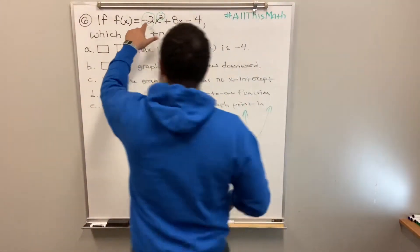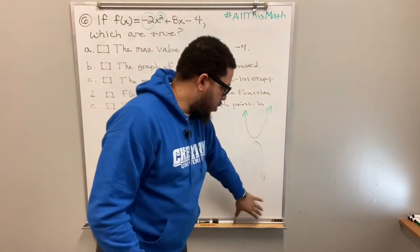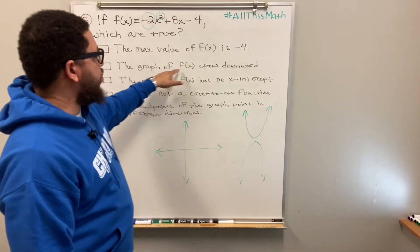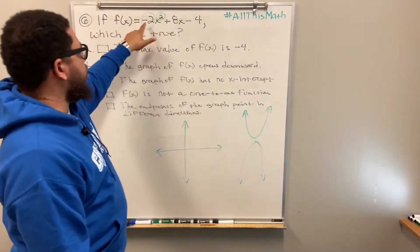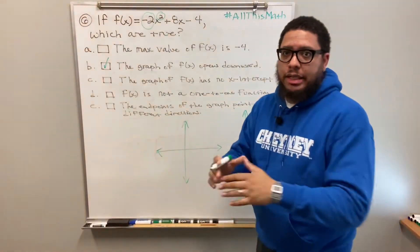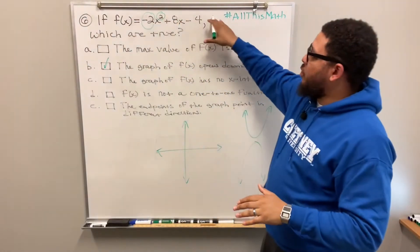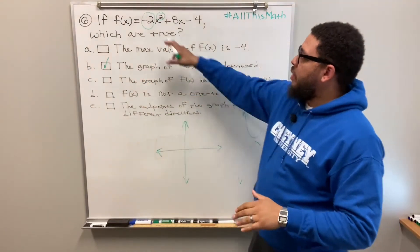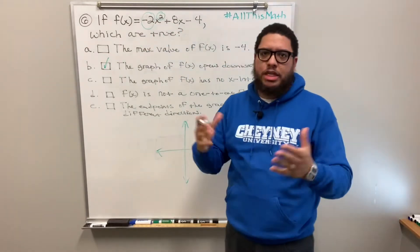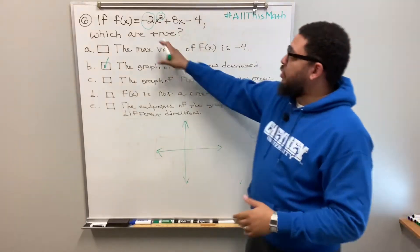In this equation we have a negative two, so this graph is going to open downward. Now, answer choice B says the graph of f of x opens downward — so because I see that negative two, I already know B is at least one of my answers. Commit this to memory: the leading coefficient — the number connected to the variable squared — if it's negative, the parabola opens down; if it's positive, it opens up.